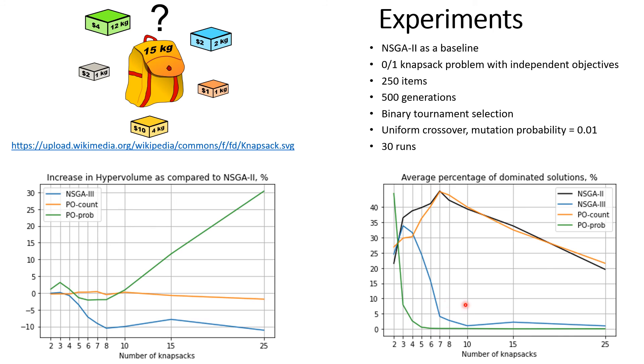The figure on the right demonstrates the average percentage of dominated solutions by other algorithms. As we can see, starting from three objectives PO-prob is never dominated by any other approach.